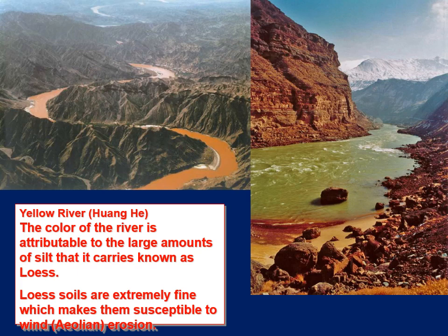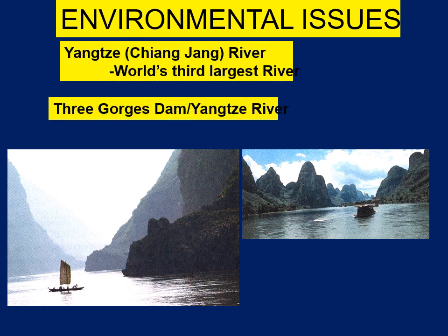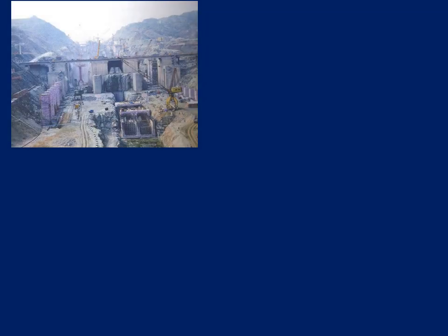There have been many times where the Yellow River has flooded and caused major loss of life, which led to projects to protect people from flooding. One of those was the Three Gorges Dam, on the Yangtze River — not the Yellow River. The Yangtze River is the world's third largest river after the Amazon and the Nile. The Nile is the longest river in the world; the Amazon is the largest by volume.